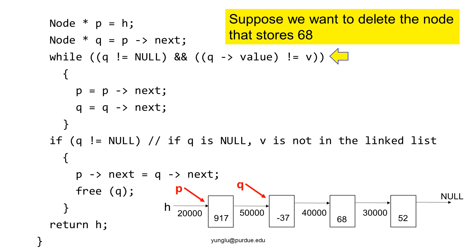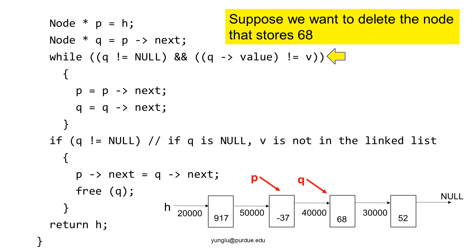If q is not null and q's value does not match, p moves to the next node and q also moves to the next node. Moving both p and q keeps p as the node in front of q. The program goes back to check whether q is null. If q is not null, the program checks whether q's value matches the value we are looking for. This time, q's value is 68, and the two values match.